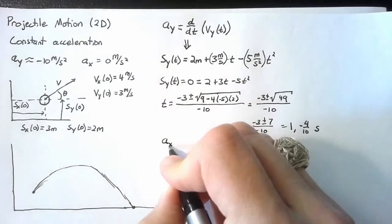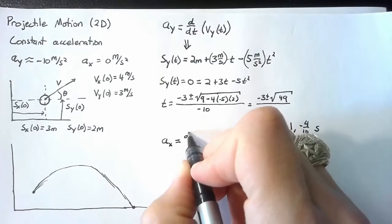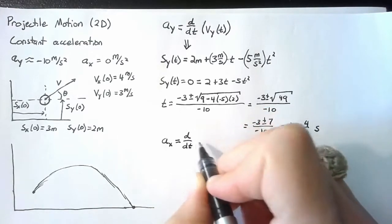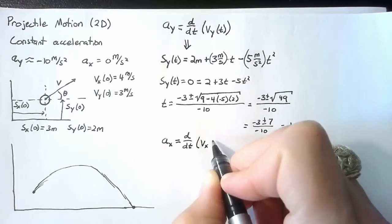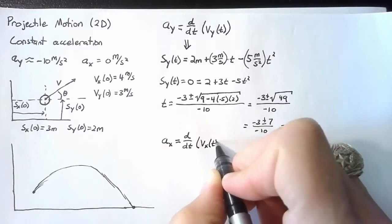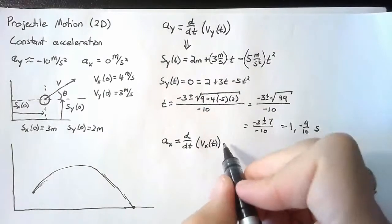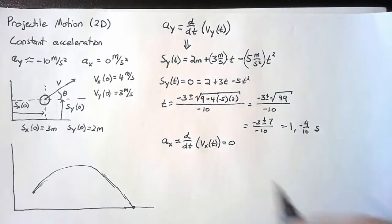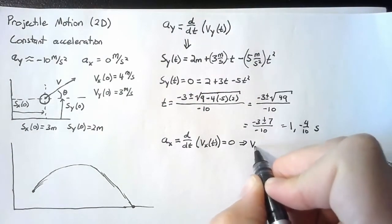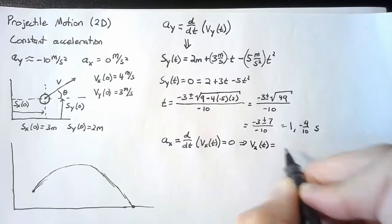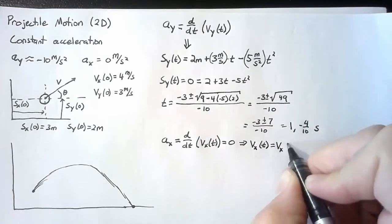So just as before, we know that our acceleration is the time derivative of our velocity in the x direction this time. Well, we said that our acceleration is equal to zero. This means that our velocity is a constant and that constant is just the initial velocity.